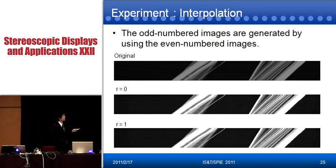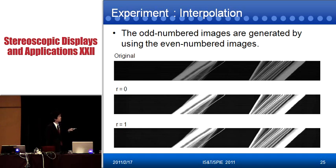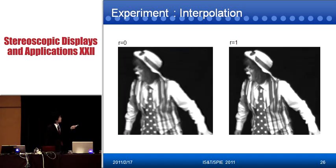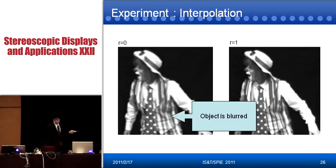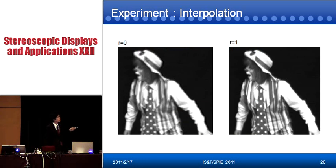This is an additional experiment where we implement interpolation. The odd-numbered images are generated by using the even-numbered images. We define the basis as a continuous function, so we can implement virtual view synthesis easily. This is the result: the output images show that the conventional method has blocking artifacts, but the proposed method overcomes these artifacts.